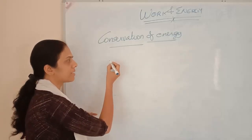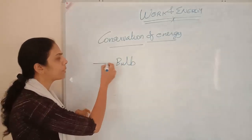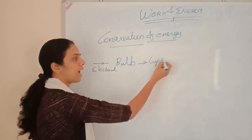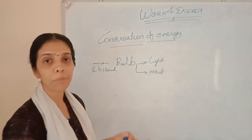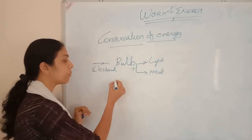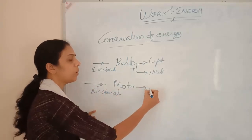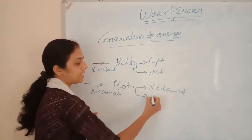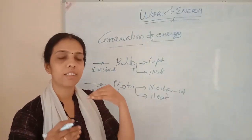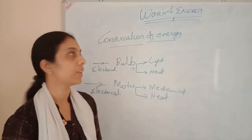Consider a light bulb — we are giving electrical energy, and that electrical energy is converting into light energy and heat energy. Similarly, while considering an electric motor, we give electrical energy and it converts to mechanical energy, and some part converts to heat energy. So energy is converting from one form to another; it is not losing. That is called conservation.